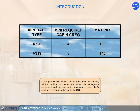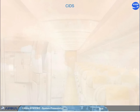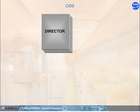Let's start with a short introduction to the CIDS. Various cabin systems are controlled, tested, and monitored by the Cabin Intercommunication Data System, CIDS. The CIDS is composed of two directors, one in active mode and one in hot standby.